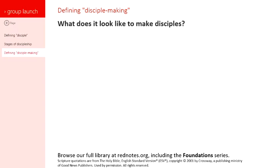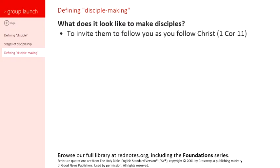We're finally ready to wrap up for the day. We've defined what a disciple is, and we've talked about the different stages of discipleship. So now we're going to talk about what does it look like to make disciples — what is disciple-making? How can we create a reproducible process for making disciples in a small group setting? Let's talk about that and give it a definition.